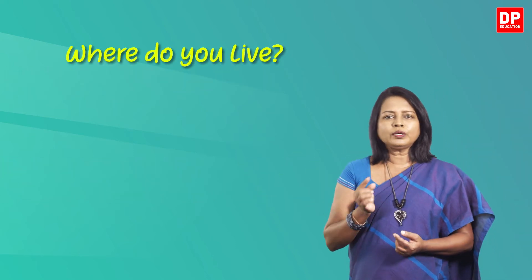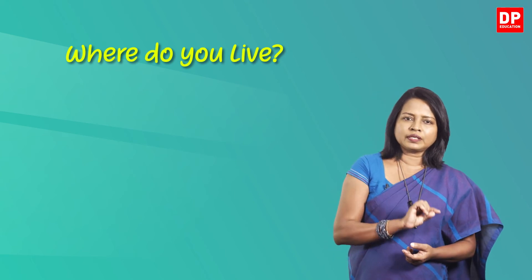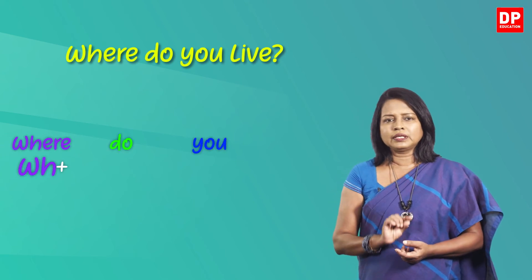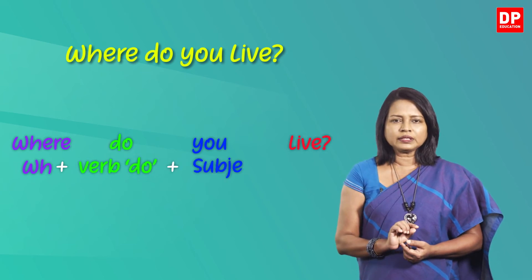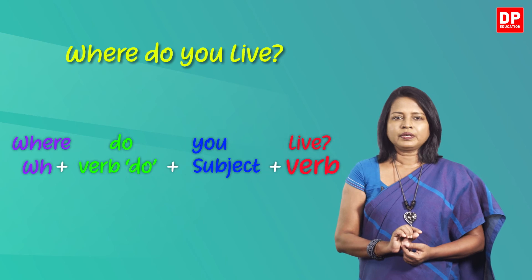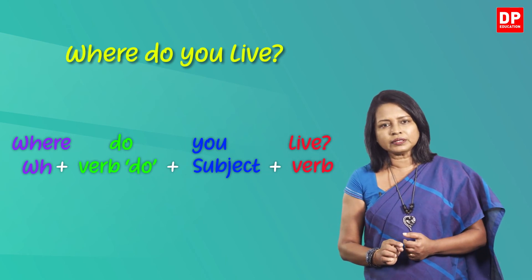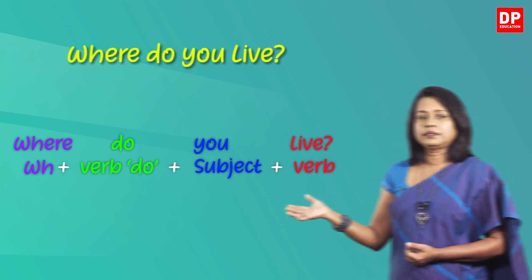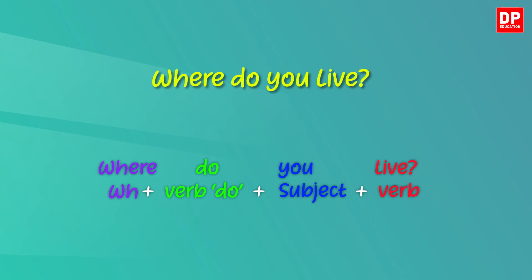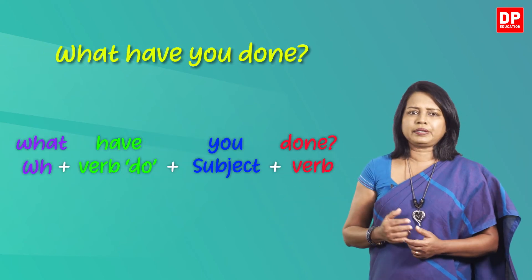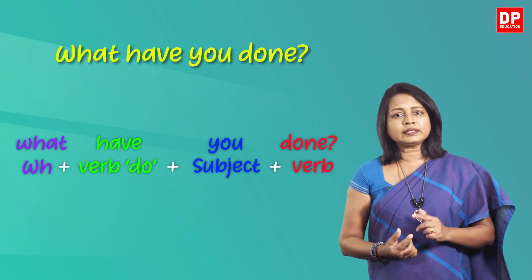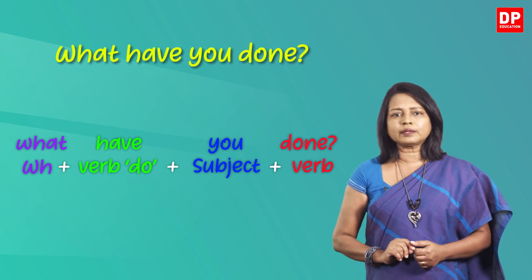Here is another example. Here also you have the WH question word, the be verb 'is', and the noun phrase 'your best friend'. Now look at this question — here you have a different pattern. First you have the WH question word, then the auxiliary verb 'do', the subject, and the main verb. Here instead of the noun phrase, you have a verb. Here is another example for the same pattern.